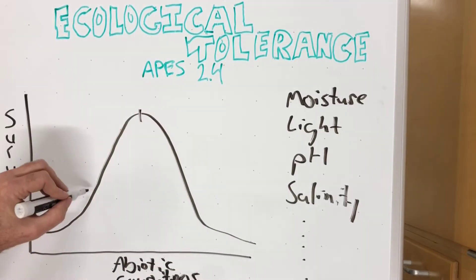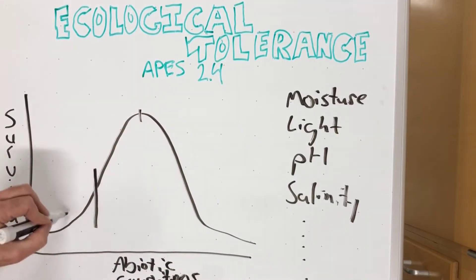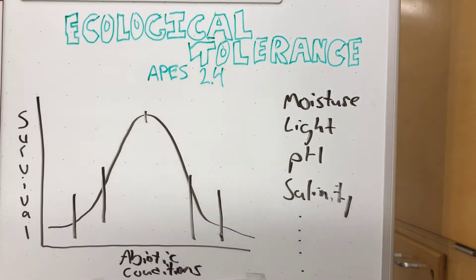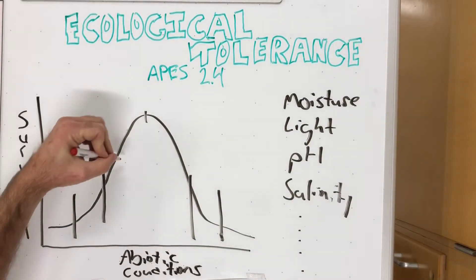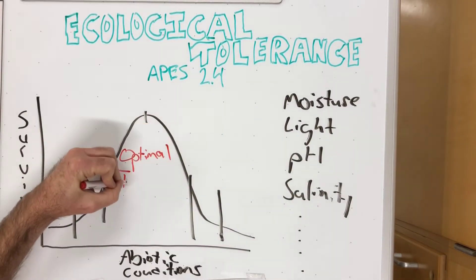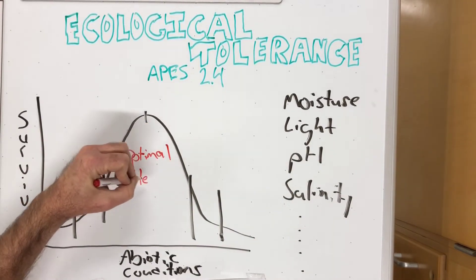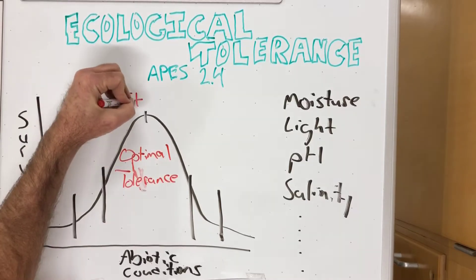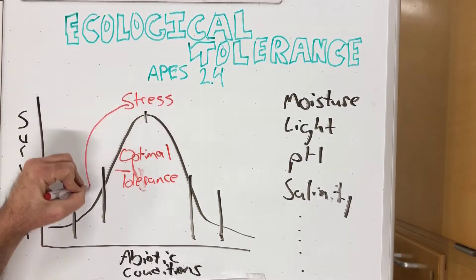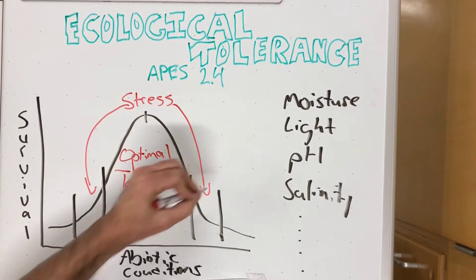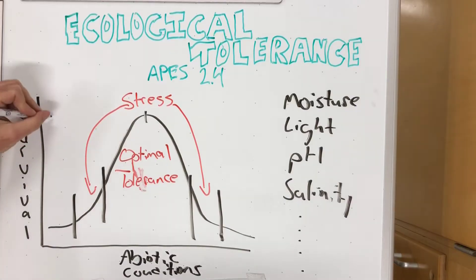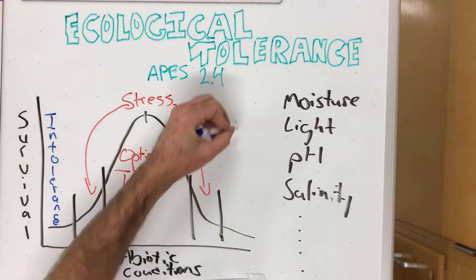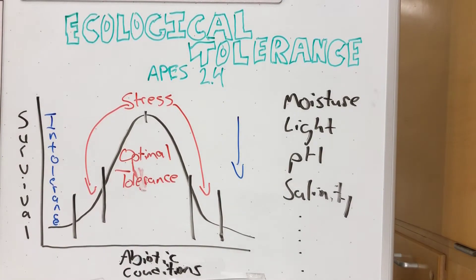Survival is graphed on a bell curve. In the middle of the bell curve, we have good survival — this is called the optimal tolerance zone. Further out, we have the zones of stress, and at the very edges where species can't survive, we call that the zone of intolerance.